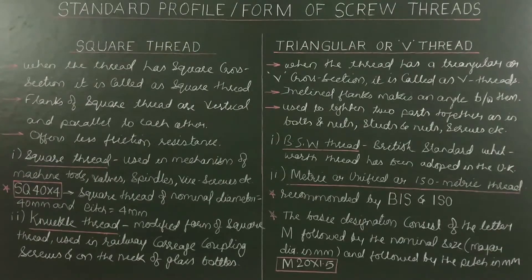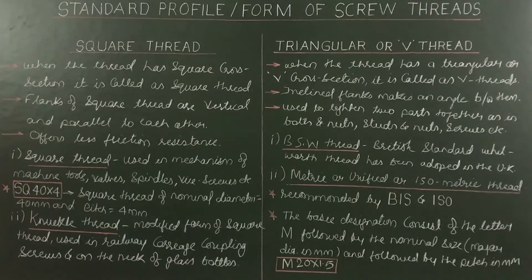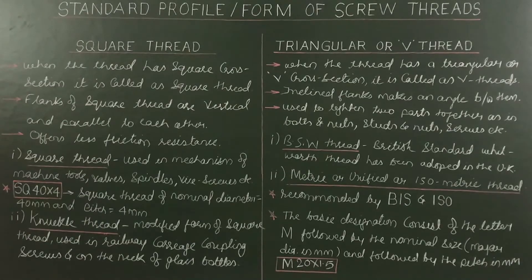Knuckle thread is a modified form of square thread and is a special purpose thread. It is used in railway carriage coupling screws and on the neck of glass bottles.